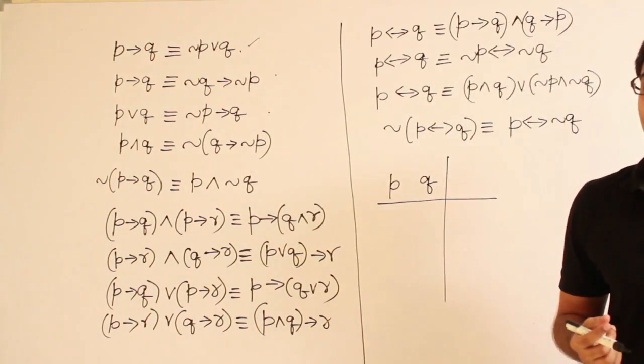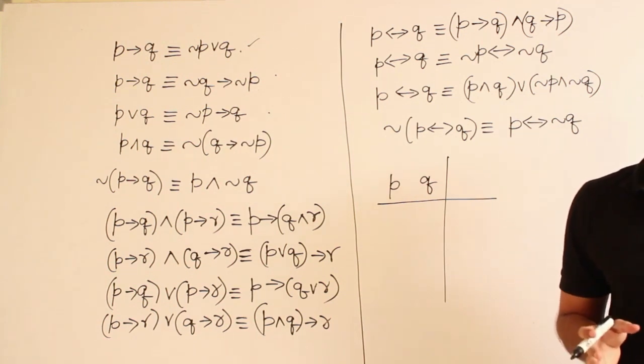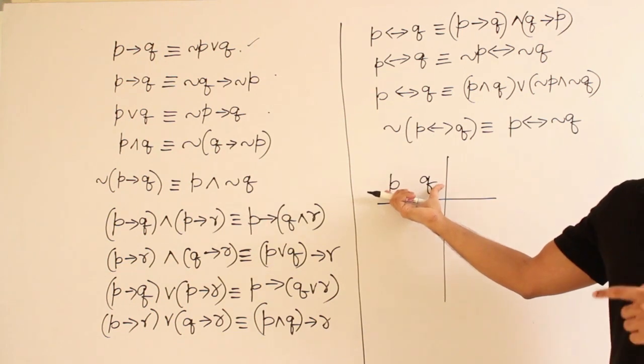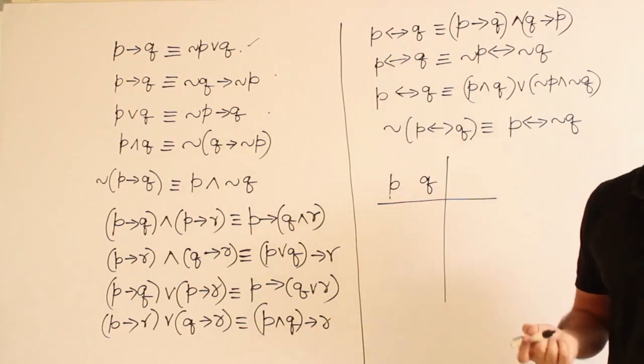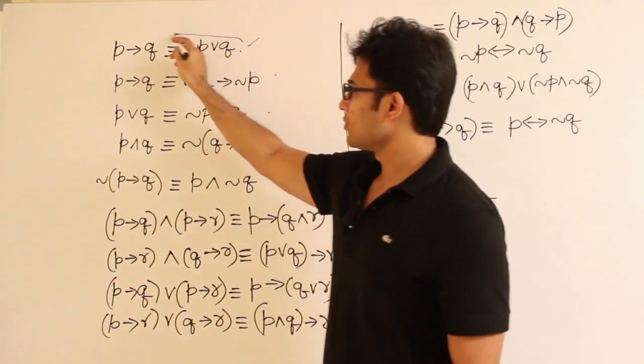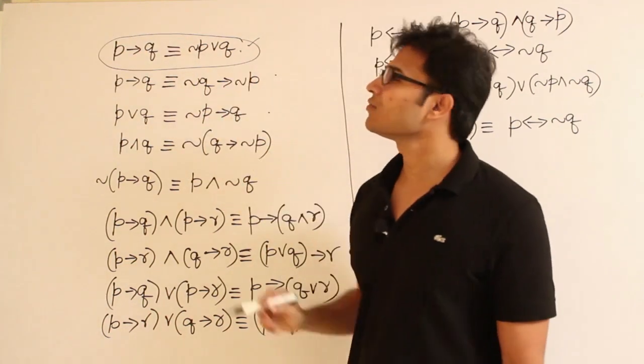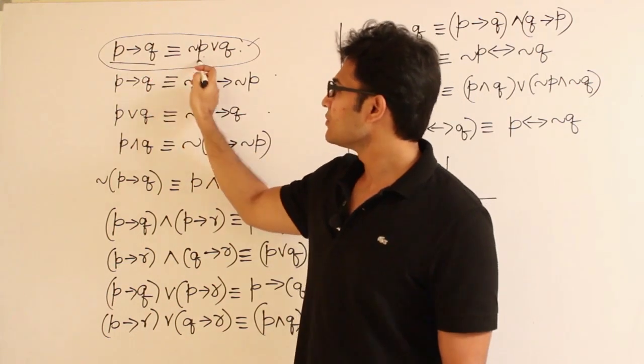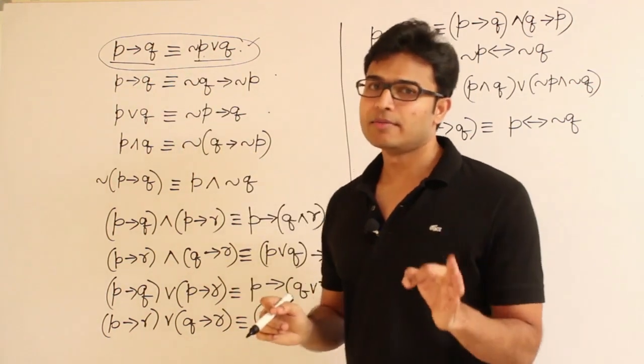The simplest and surest method to answer it is just take the table, right? And how many variables you should write here depends on how many variables the formula has. Now, if you see this particular formula, let me not call it a formula, equivalence.